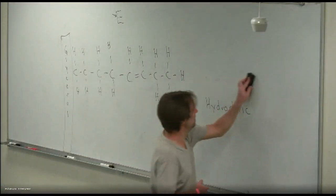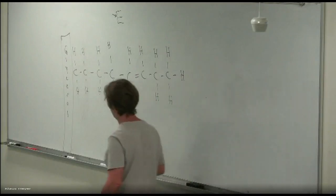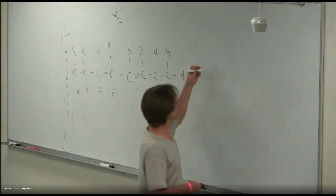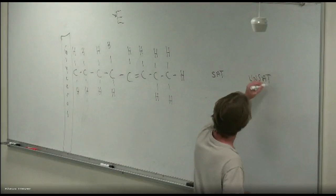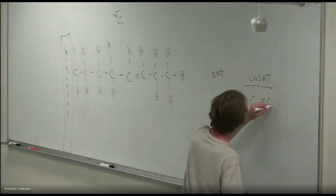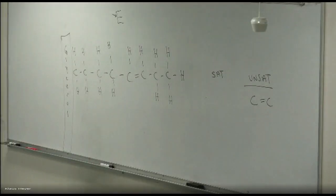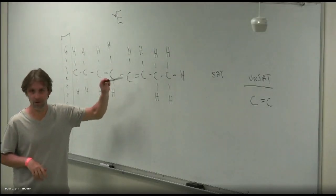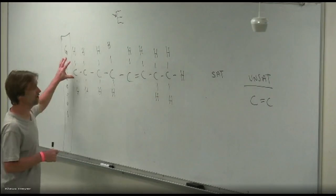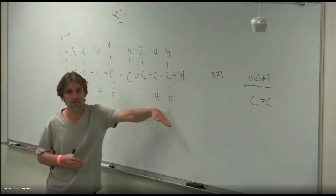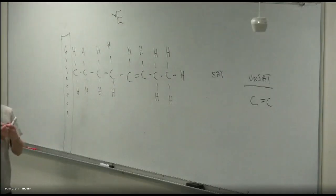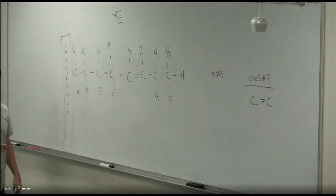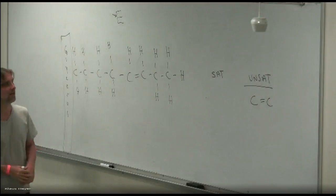So unsaturated and saturated fats: unsaturated has a double covalent bond, saturated doesn't. Also, where the double covalent bond is, the chain is actually bent — like a piece of metal that got bent. Because it's kind of weak at that bend point.